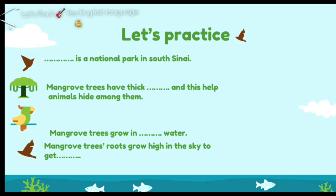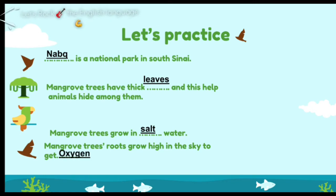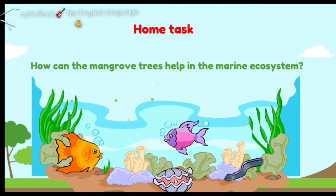Now let's practice. Tell me: what is the national park in South Sinai? Excellent — Napk. Mangrove trees have thick leaves, and this helps animals to hide among them. The mangrove trees grow in salt water. Mangrove tree roots grow high to get oxygen. Tell me after the video: how can the mangrove trees help in the marine ecosystem? We're going to take another kind of ecosystem in the next video. Goodbye!